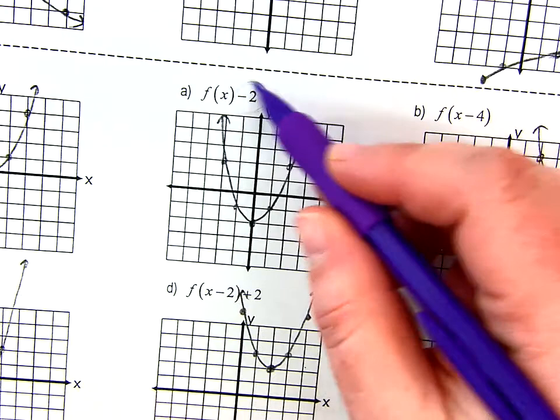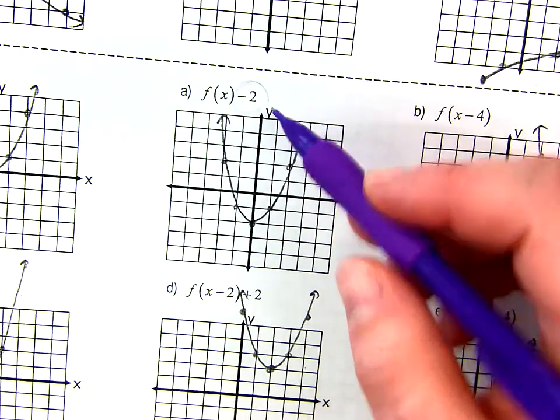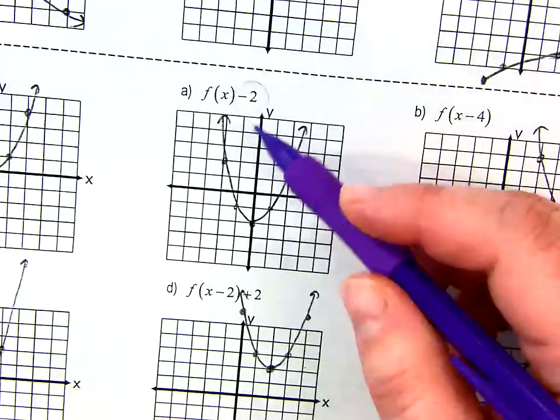So we graph our parabola, and then minus 2 on the outside does what to the whole graph? Drops it down 2. So you should have the exact same thing drop down.